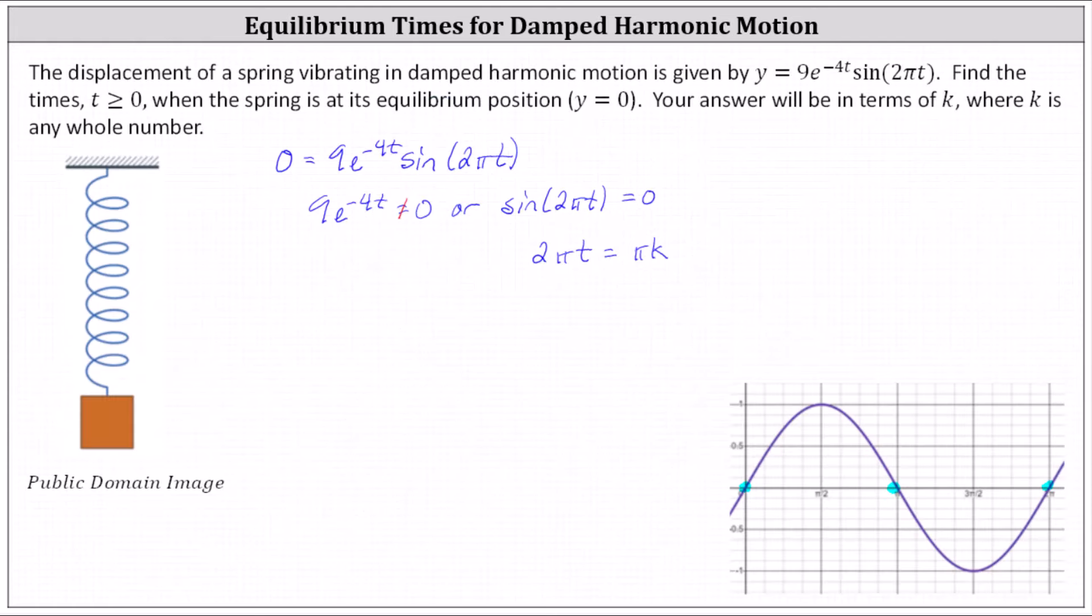And now solving the equation for t, we divide both sides by 2π. Simplifying, we have t equals k divided by two, or one half k. They didn't give us the units for time, but this indicates the spring is at its equilibrium position every one half k units of time.